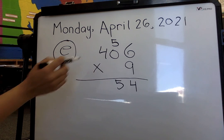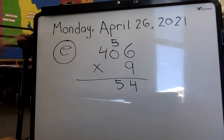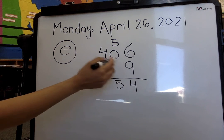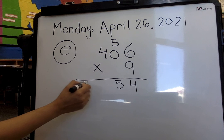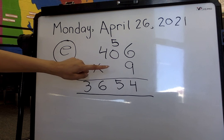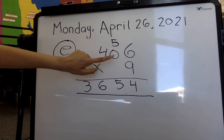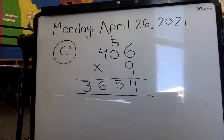So now we go ahead and we multiply our 9 to our 4. So look at your 9 times table, or look at your multiplication sheet. So 4 times 9, or sorry, 9 times 4 gives me 36. So when I multiply my 406 to 9, my answer is 3,654. So that is question E.